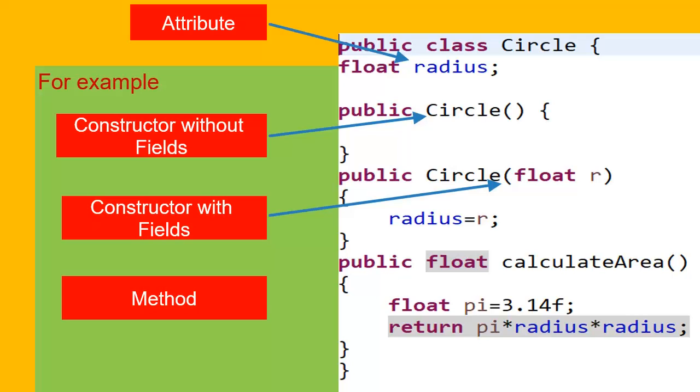So there can be multiple constructors in a class. If a class does not have a constructor, then the default constructor will be called.